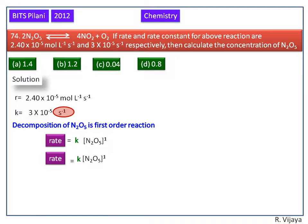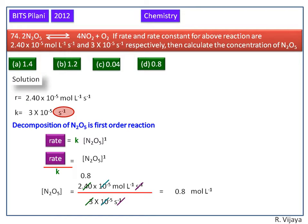Now we bring the rate constant on left hand side. Now we can calculate the concentration of N2O5 by substituting the rate and the rate constant values. Now we are simplifying these values. We can get 0.8 mol per liter.